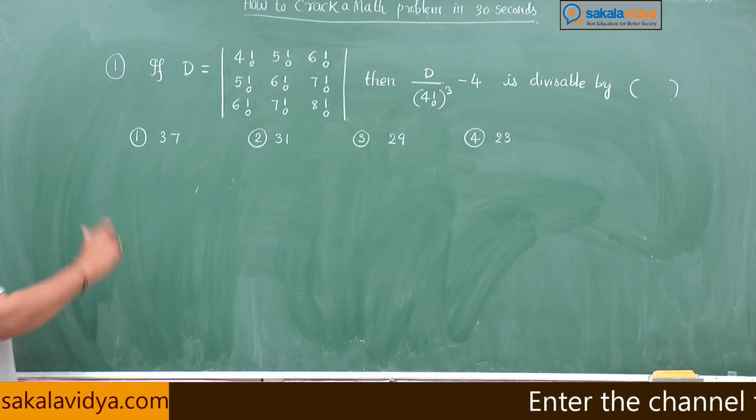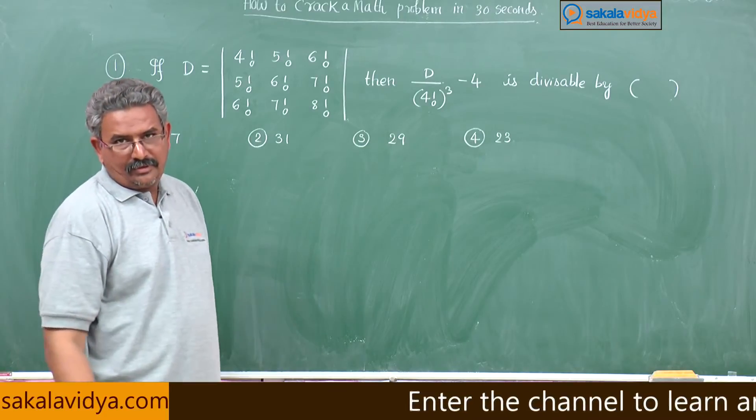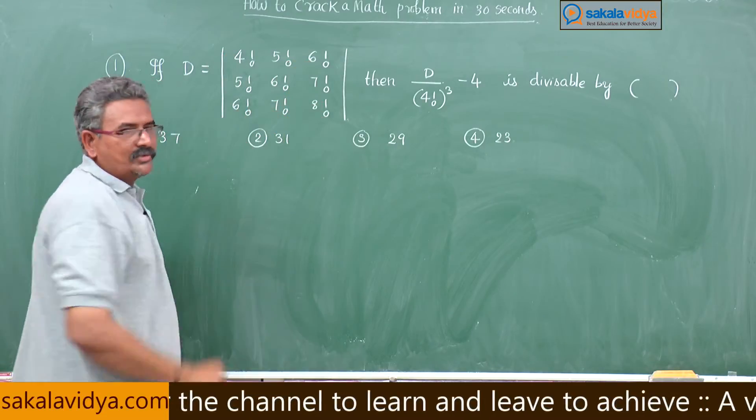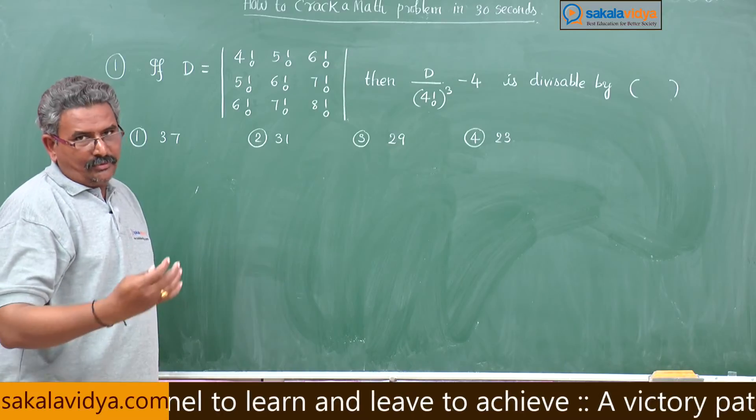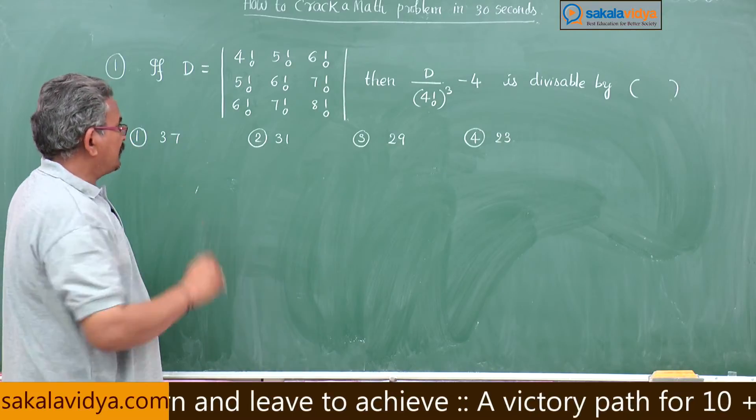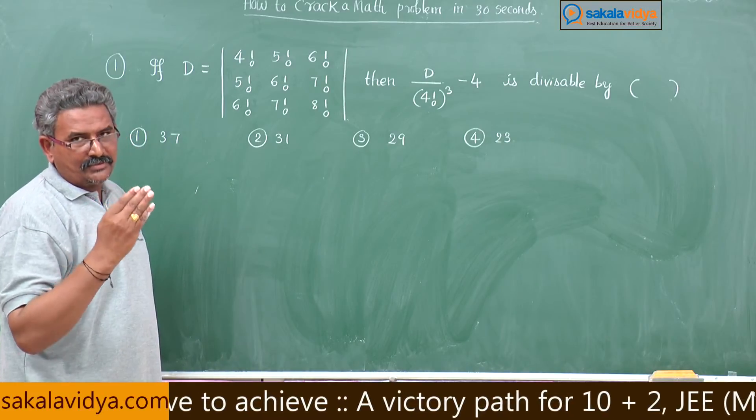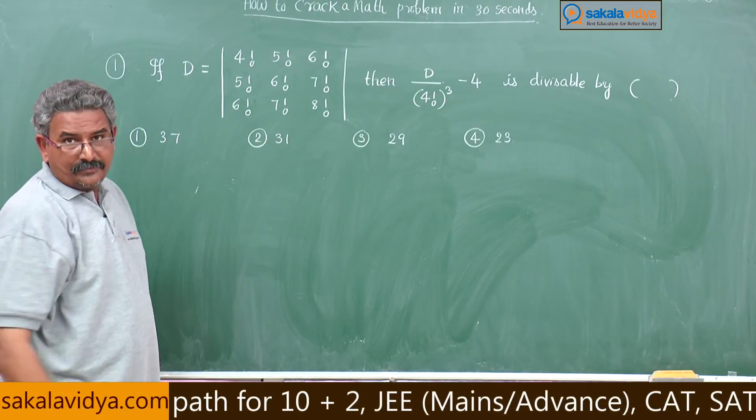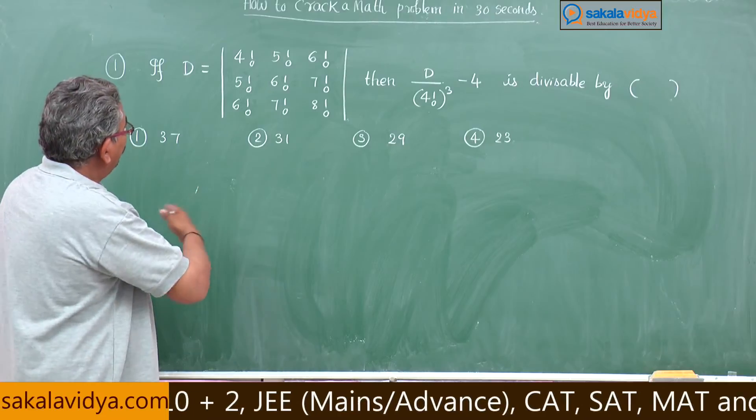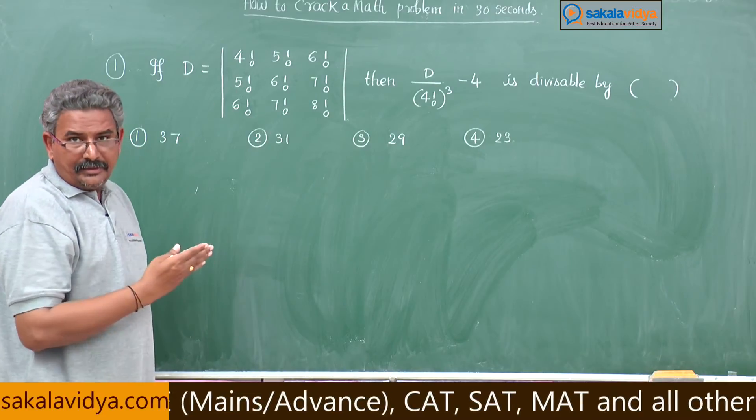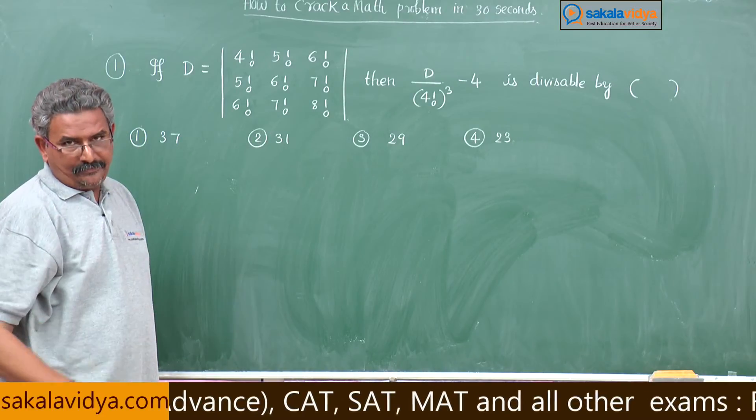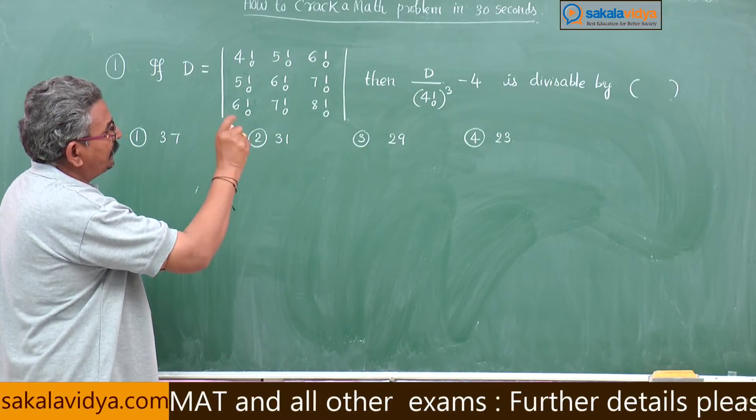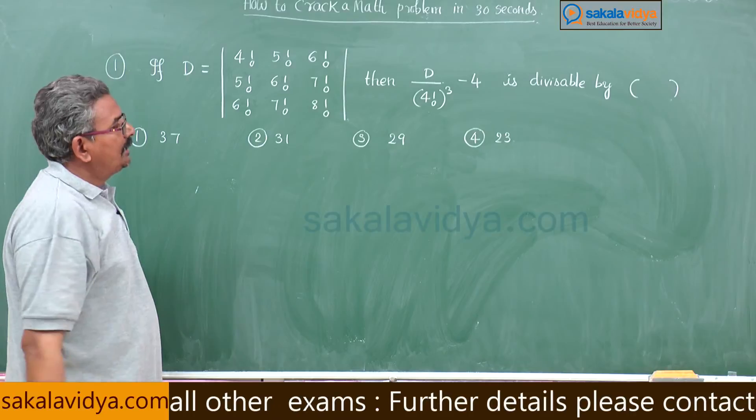Now, let us analyze this problem. See, the D stands for determinant of this 3 by 3 square matrix. You know, 4 factorial means 24, 5 factorial means 120, 6 factorial means 720, very bigger values you may get. By writing all those values and then getting determinant is very lengthy method.